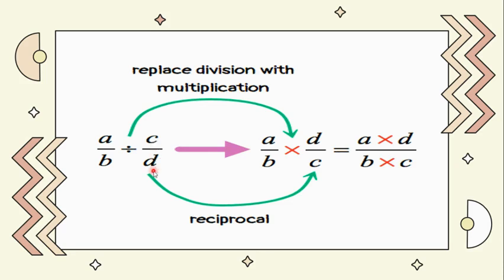Here, C over D, getting its reciprocal or inverse, just interchange their position. So from C over D, it becomes D over C. And then, follow the rule in multiplying fractions. So that would be A times D all over B times C.